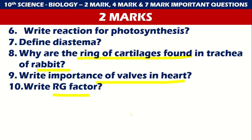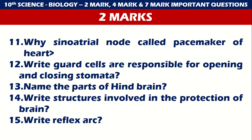The ring of cartilage found in the trachea of rabbit is very important, and the importance of valves in the heart is also very important. Why is the sinoatrial node called the pacemaker of the heart? Write how guard cells are responsible for opening and closing stomata. Name the parts of the hindbrain. Write the structures involved in the protection of the brain and write the reflex arc. Reflex arc and protection of the brain are very important, and the sinoatrial node as pacemaker is also very important.